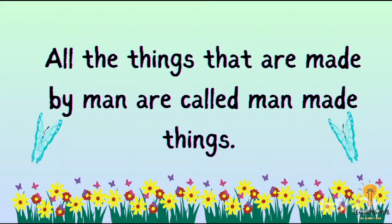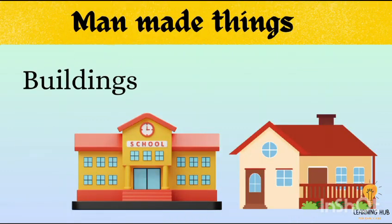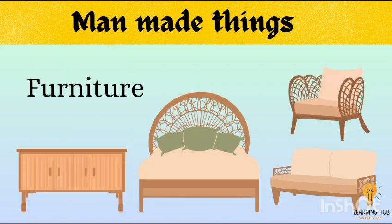All the things that are made by man are called man-made things. Buildings are made by man, so these are man-made things. Furniture and doors are also made by human beings.